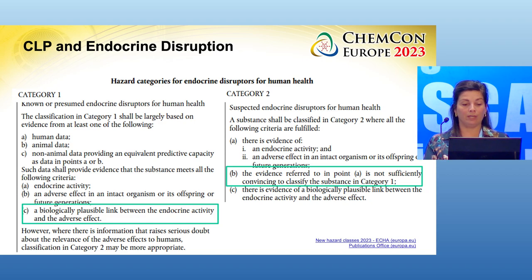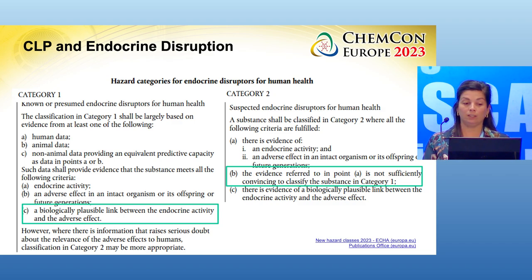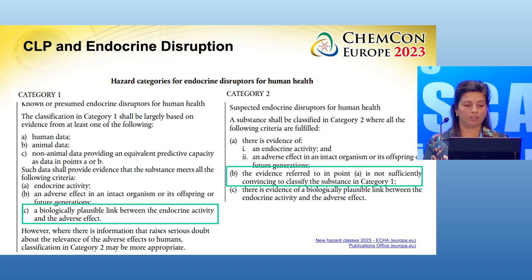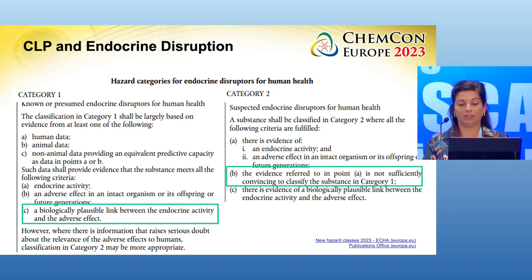I'm really happy that alternatives to animal testing are already mentioned, and that we can also refer to non-animal data. I hope it will stimulate the further development of animal testing alternatives. Looking at the biologically plausible link, I think that will be the biggest challenge. Another challenge in data interpretation is looking at the difference between category 2 and category 1.